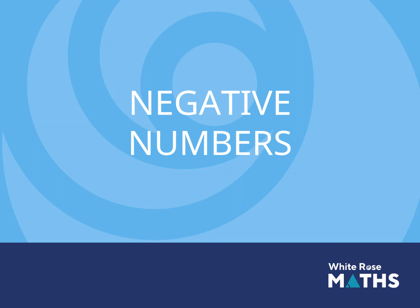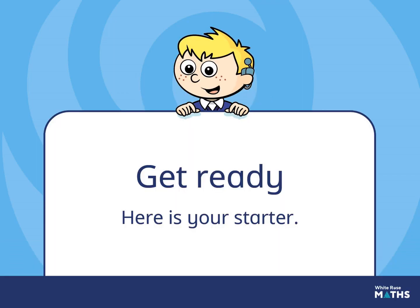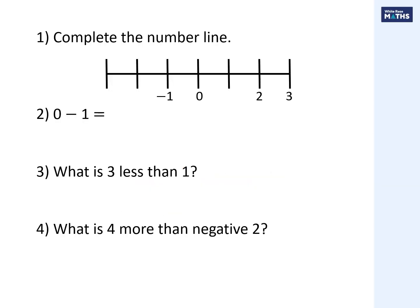Let's get started with our starter. Question one: complete the number line. We have minus one, zero, one - so minus two goes there, and minus three goes there. Question two: zero minus one - start at zero and go to the left one. The answer is minus one, or negative one.